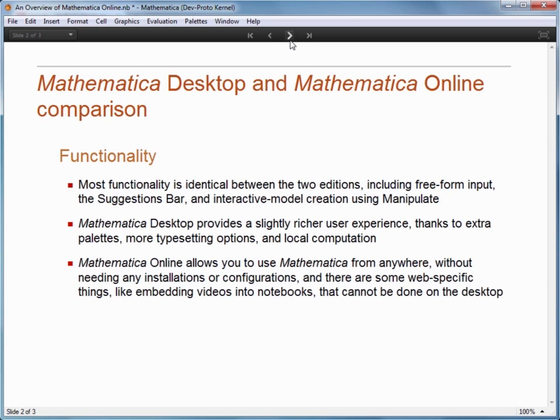In terms of functionality, most of it is identical between the two editions, so you'll see things like freeform input and the suggestions bar in both. Even things like creating interactive models with Manipulate work in Mathematica Online. There are a few differences. Mathematica on the desktop has a slightly richer user experience thanks to extra palettes, more typesetting options and local computations. As an example of the latter, this means that Manipulate models can be more responsive when run locally if the control is something like a slider bar.